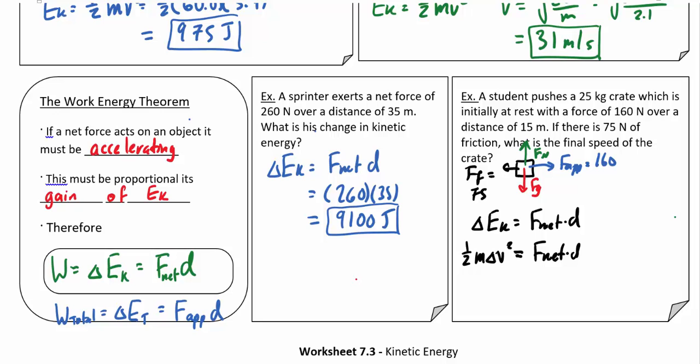Notice that if we have a change in kinetic energy, the mass of the object is not changing. So I can put the delta here just right beside the V, because really what's going to change is the speed. It's going to speed up or it's going to slow down.